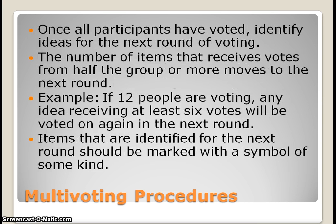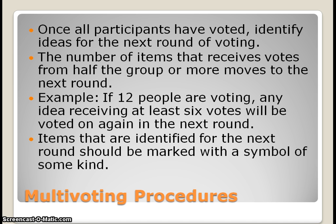Once all participants have voted, identify items for the next round. The number of items that receive votes from half the group or more moves to the next round. For example, if 12 people are voting, any idea receiving at least six votes continues; ideas receiving fewer than six are eliminated. Items identified for the next round should be marked with a symbol — circling them or marking them with a star — so everyone knows which ideas are still available to vote on.